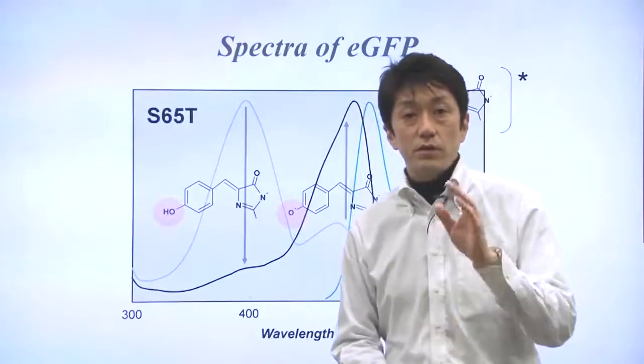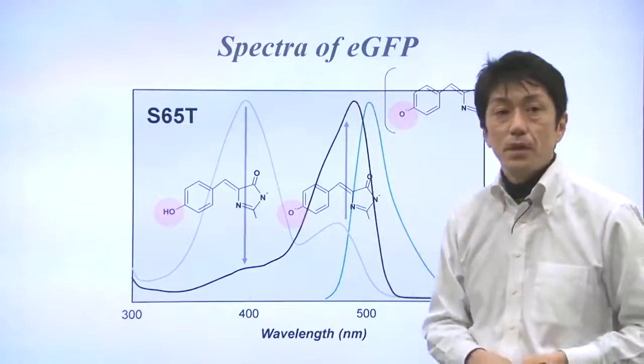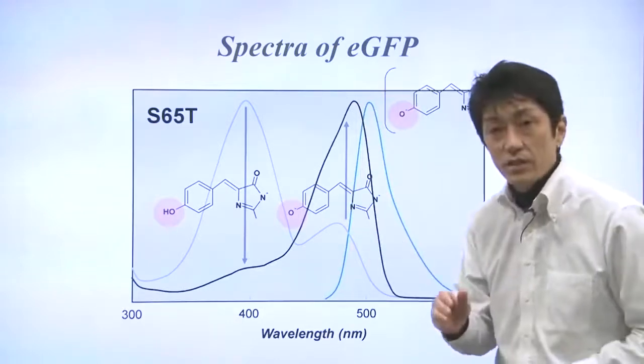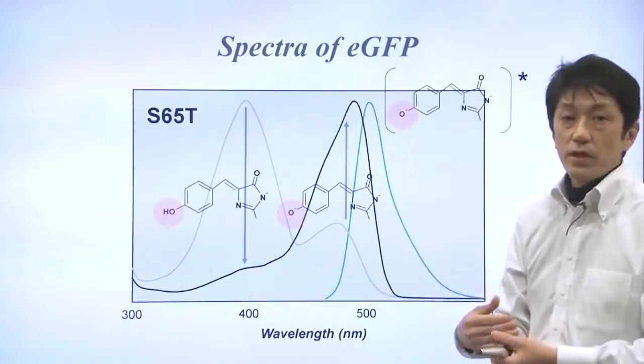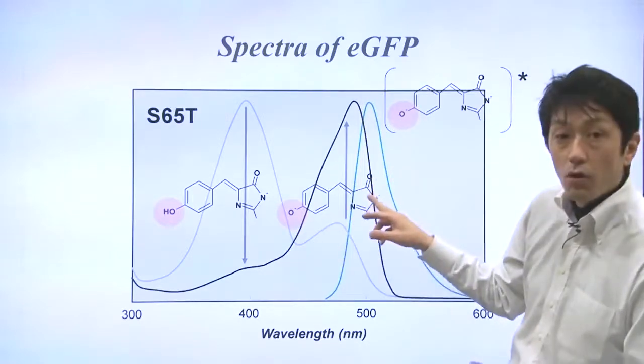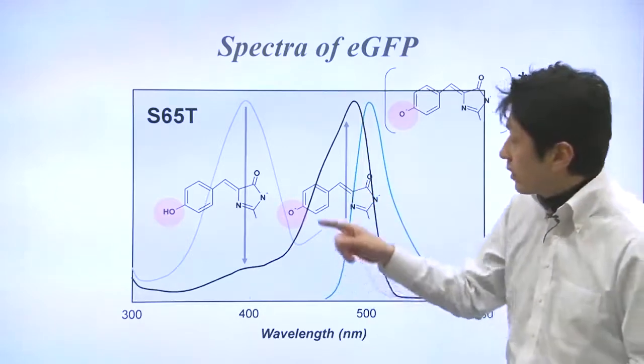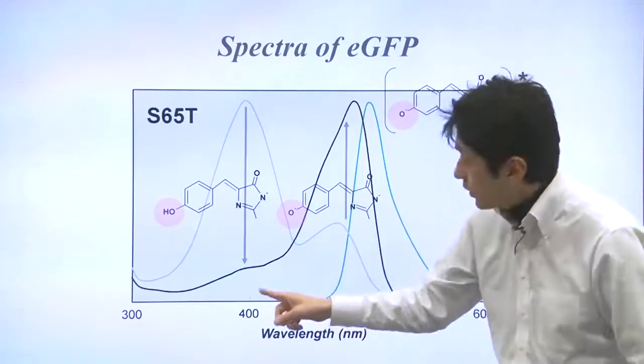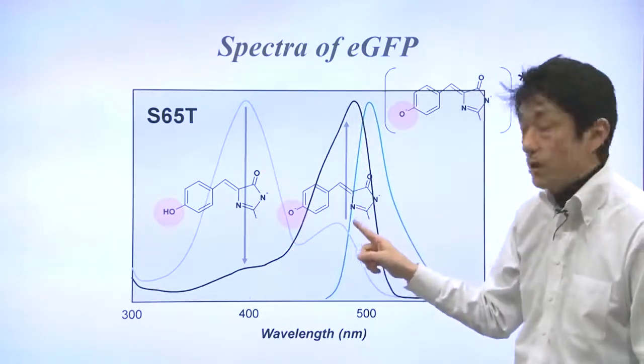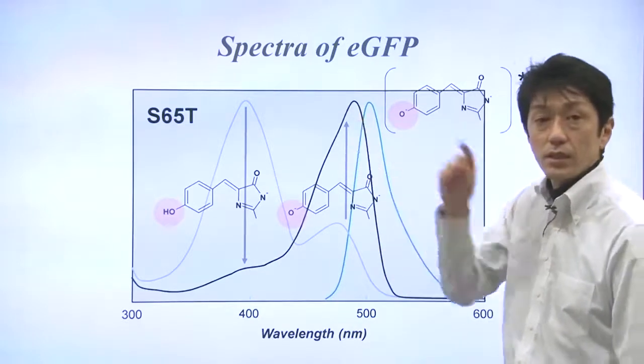The mutant is called EGFP. In EGFP, the mutation of serine-65 to threonine increases the population of ionized form of the chromophore. The peak at 395 nanometers decreases, and the peak at 475 nanometers increases.